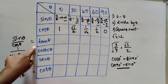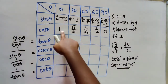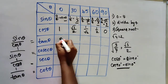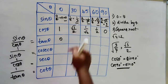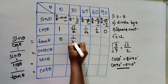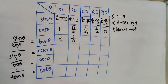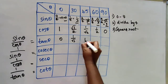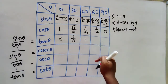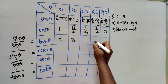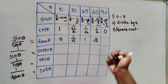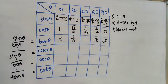Next, tan theta equals sin by cos. So tan 0 = 0/1 = 0. Tan 30 = (1/2) / (√3/2) = 1/√3. Tan 45 = (1/√2) / (1/√2) = 1. Tan 60 = (√3/2) / (1/2), the 2s cancel, giving √3. Tan 90 = 1/0, which is infinite or undefined.